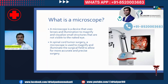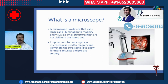What is a microscope? A microscope is a device that uses lenses and illumination to magnify and visualize small structures that are not visible to the naked eye. In spinal cord tumor surgery, a microscope is used to magnify and illuminate the surgical field to allow for more accurate and precise surgery.